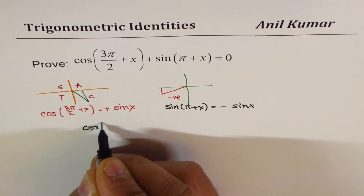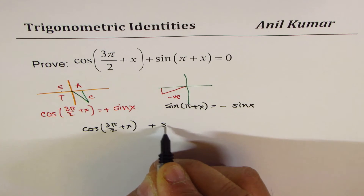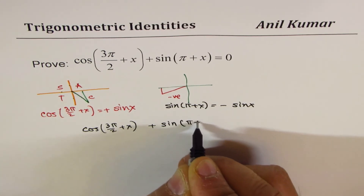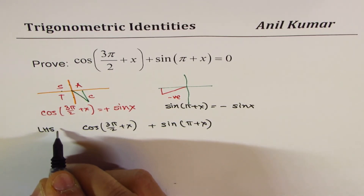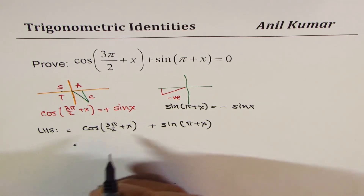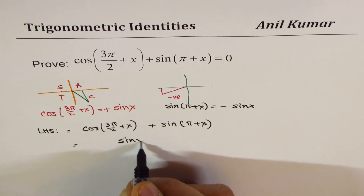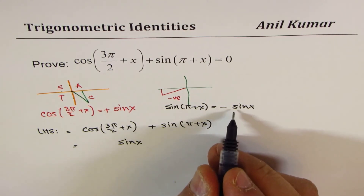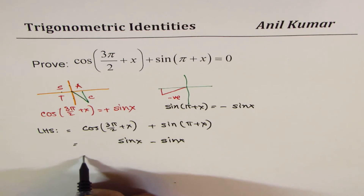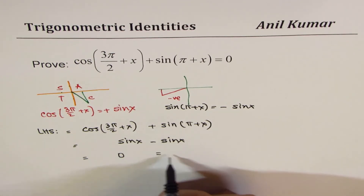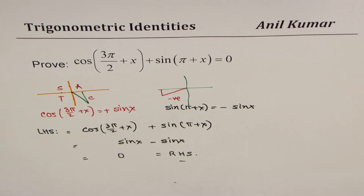So now let us write down the identity and prove it. The left-hand side is cos(3π/2 + x) + sin(π + x) = sin(x) + (-sin(x)) = 0, which is the same as the right-hand side. That is how you prove it.